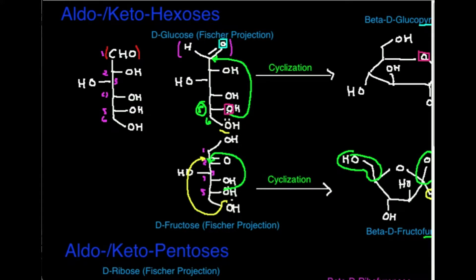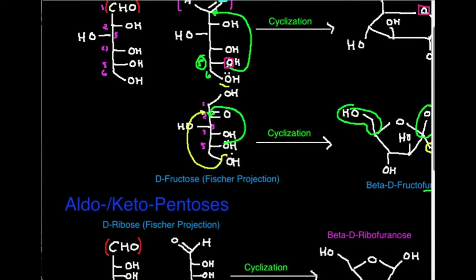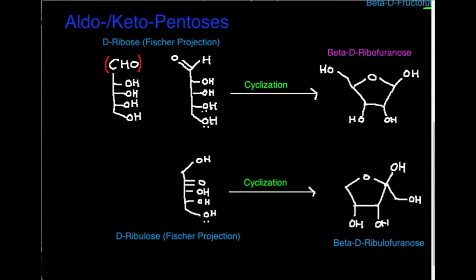Alright, so in the last video, we looked at aldo and keto hexoses, and we looked at their cyclizations and discussed why they occur, and just showed kind of how they occur also. We're going to do the same thing now for aldoses and ketoses, but now we're going to look at carbohydrates with five carbons, and those are termed pentoses. So let's jump in right where we started before.